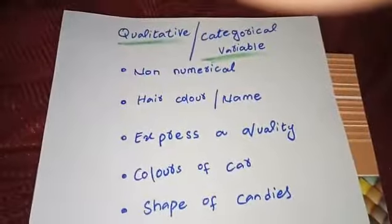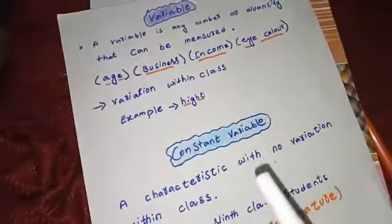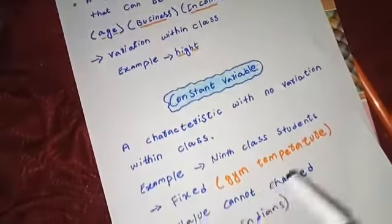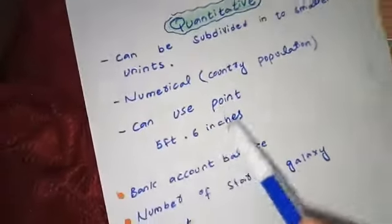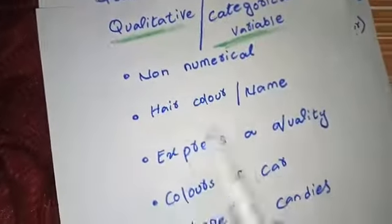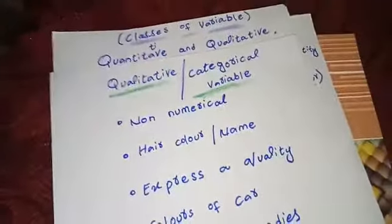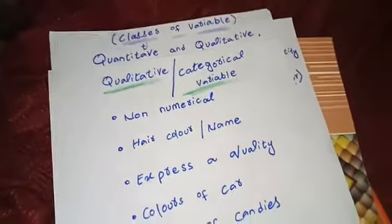To summarize: a variable is any number or quantity which you can measure. A constant variable has no variation — one word is used for all, like 'Pakistani' or 'Indian.' A quantitative variable can be subdivided into smaller units, is numerical, and can use decimal points — like bank account balance. A qualitative variable is non-numerical and expresses a quality, like car colors or candy shapes. Thank you so much — please like the video if you learned something from it.